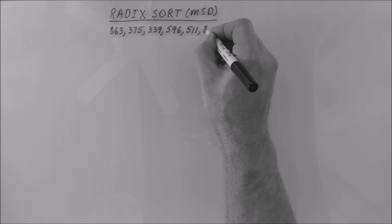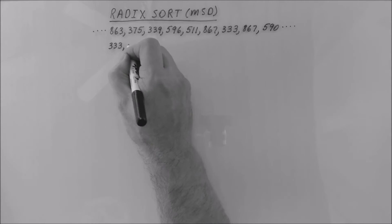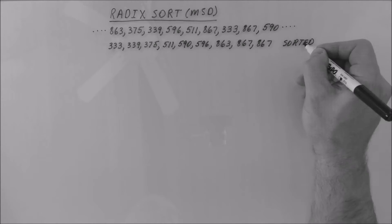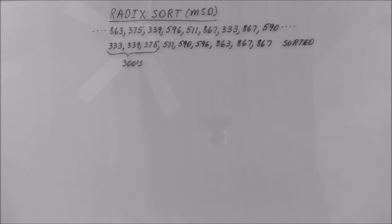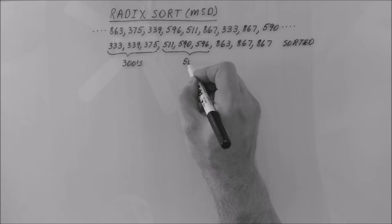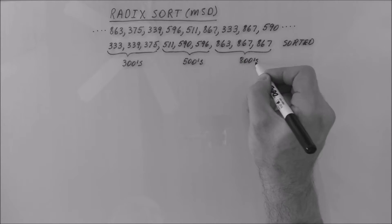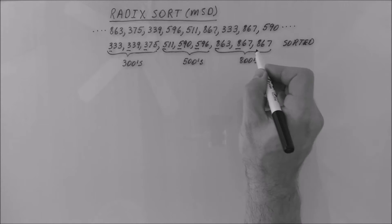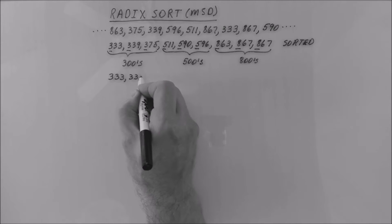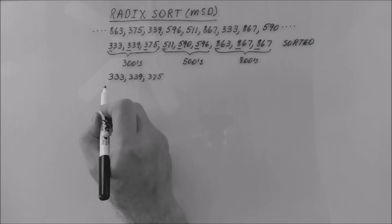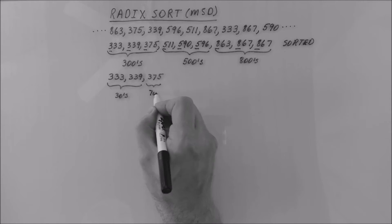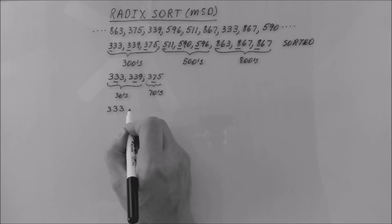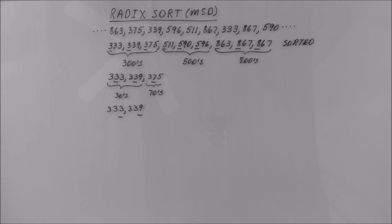Let's start with a small example that takes several numbers unsorted, then sorts them increasing from left to right. Notice that all three hundreds are together on the left, the five hundreds are together, and the eight hundreds are together. The three hundreds are to the left of the five hundreds, which are to the left of the eight hundreds. Within the three hundreds, the thirties are together and the seventies are together, with the thirties to the left of the seventies. Within the thirties, threes are to the left of the nines.